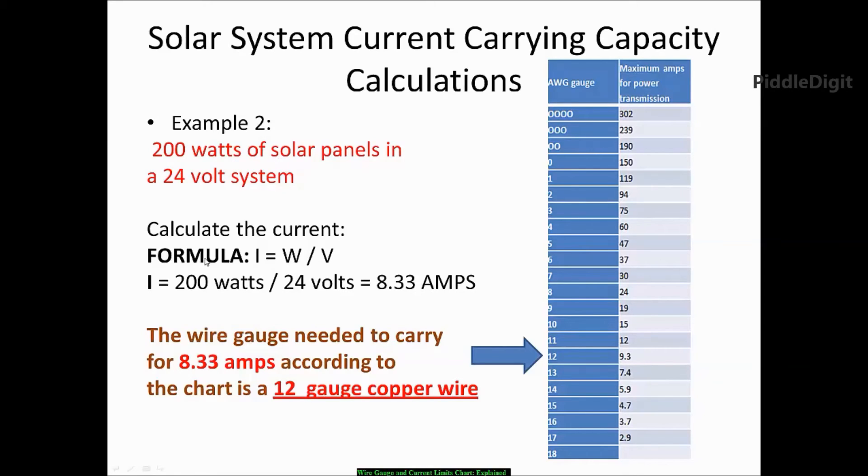So the formula is still the same. We will divide in this example 200 by 24, which equals 8.33 amps.